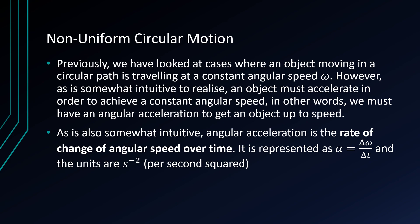So the way that it accelerates is known as an angular acceleration, which is the rate of change of angular speed over time, rather intuitively. It is represented by the letter alpha and it's simply the change in angular speed over time. The units are per second squared, which can also be written as radians per second squared.